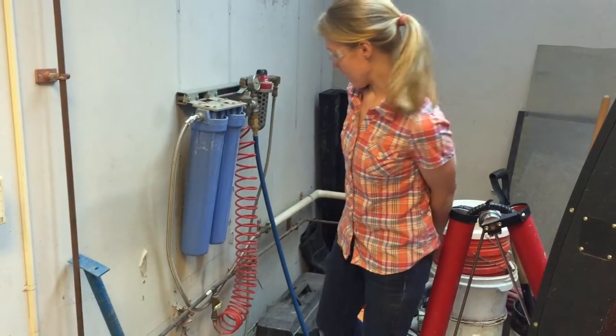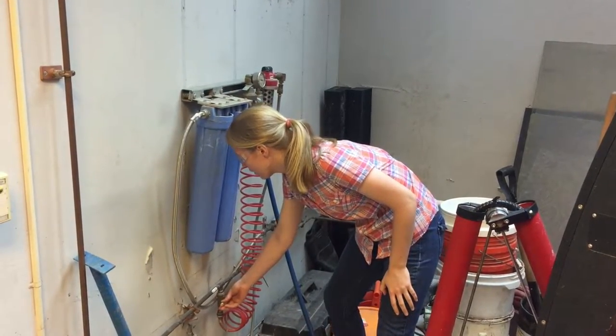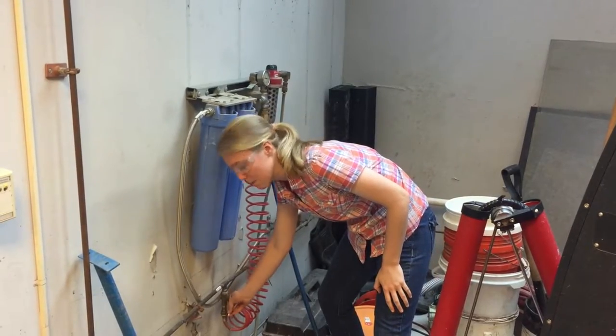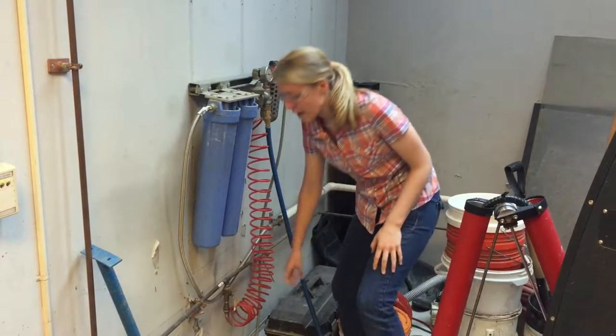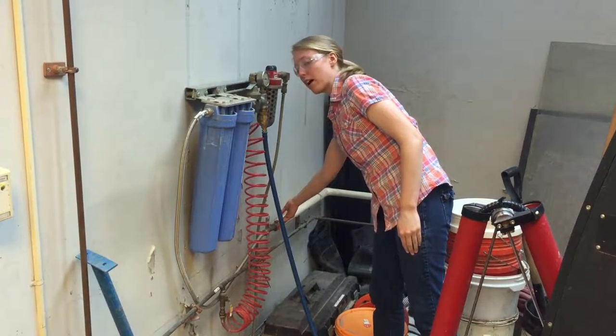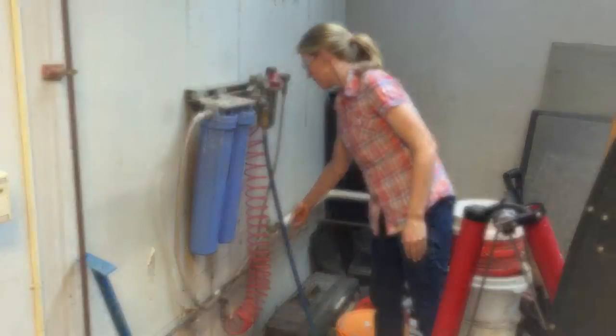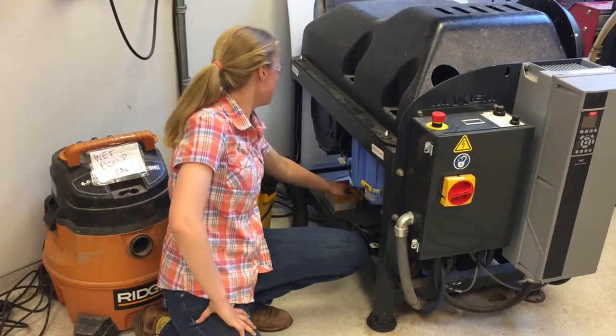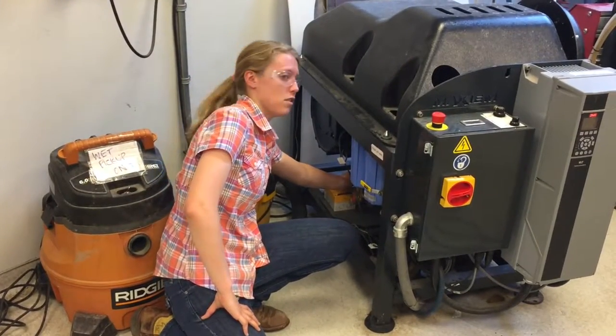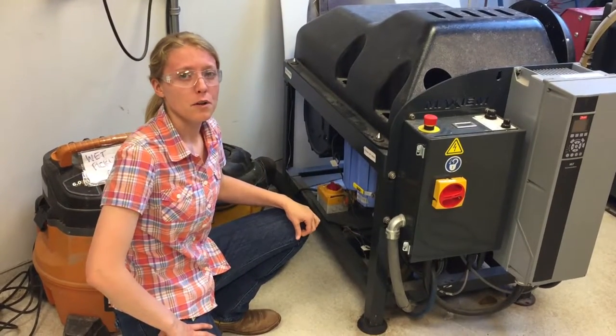Next, go behind the water jet and turn the air valve counterclockwise to the 6 o'clock position. Next, turn this red switch clockwise to the on position. Once it's turned on, you can hear the motor running in the background.